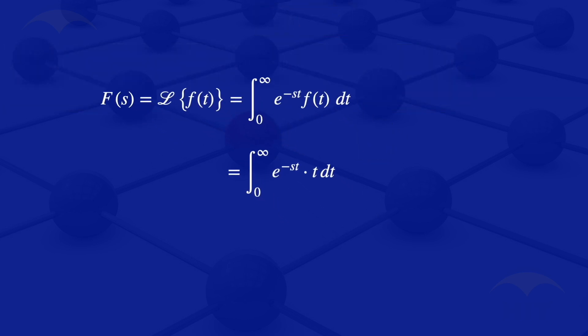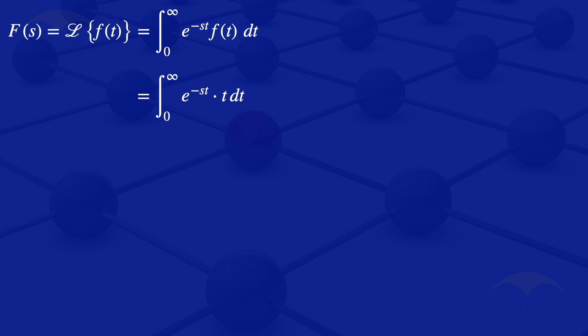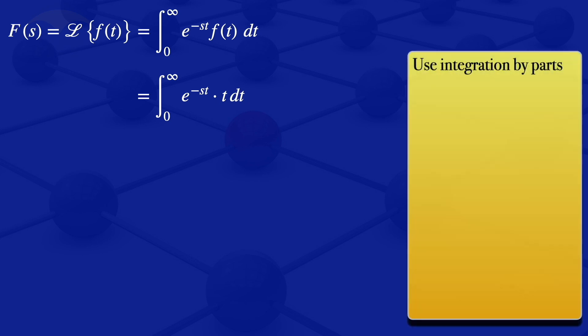Looking at that integral, it's a product of two functions of t: e^(-st) and t. So to evaluate that integral we will use integration by parts. For integration by parts we have the integral of u dv equals uv minus the integral of v du.